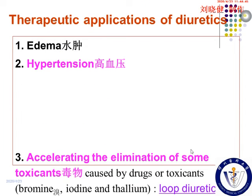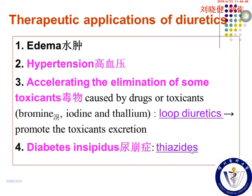For hypertension, thiazide diuretics are commonly used and are one of the basic antihypertensive drugs. You will study these again in the chapter on antihypertensive drugs. For some serious hypertensive crisis, loop diuretics may be useful. And in patients with resistant hypertension, spironolactone is sometimes also helpful, though thiazide diuretics are the common antihypertensive choice.